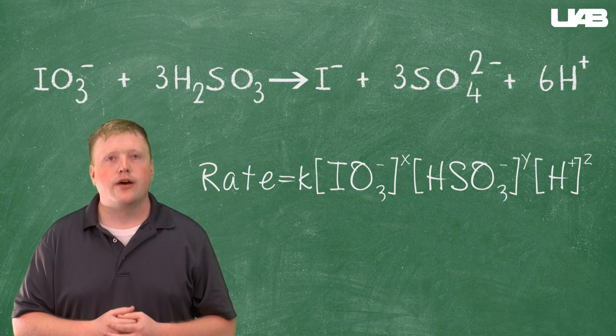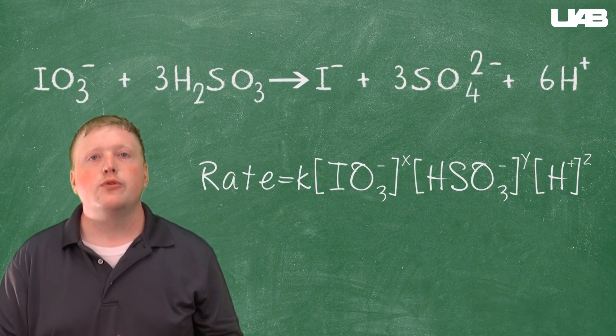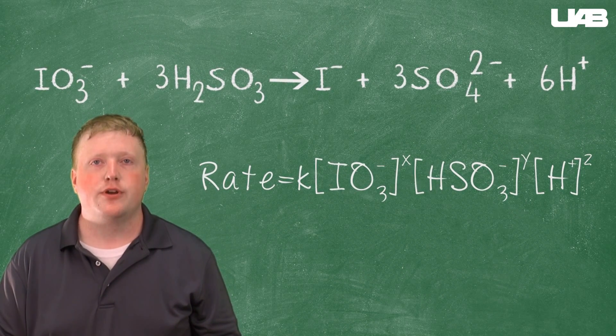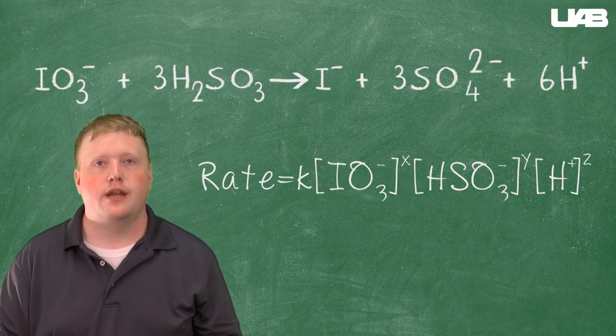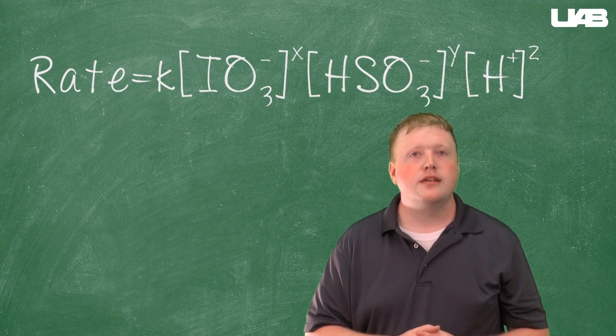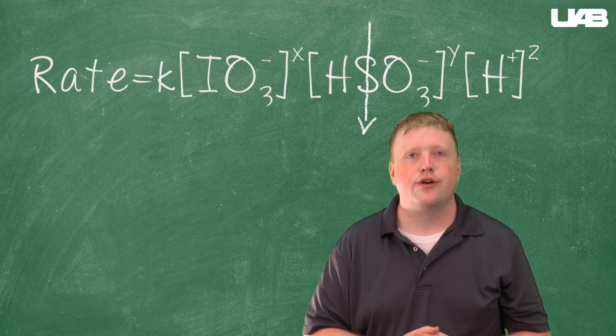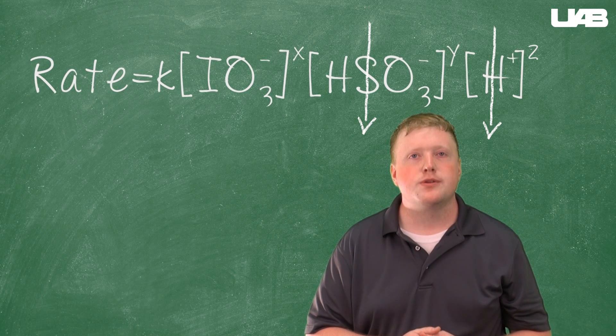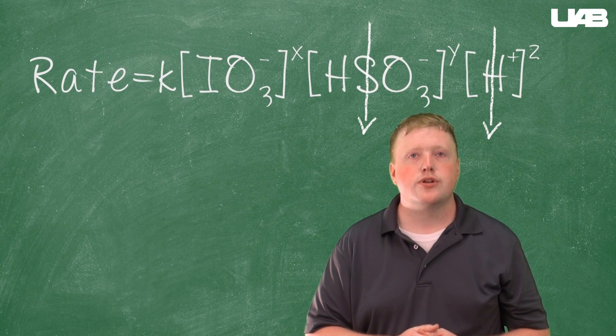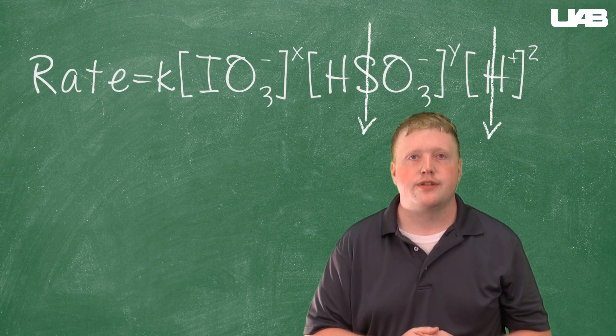To get these values we need to be a little clever because there are four different variables. It would be difficult to model an experiment to find the values of all four variables simultaneously. So to make it simpler for ourselves, we are going to decrease the concentration of the bisulfide and the hydronium to the point where as the reaction proceeds, their concentrations do not change in a significant way in relation to the iodate.